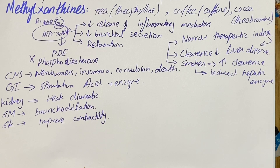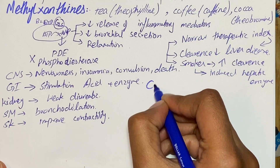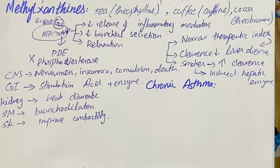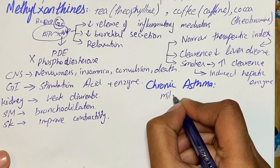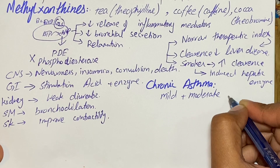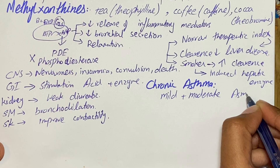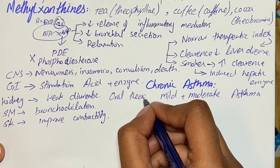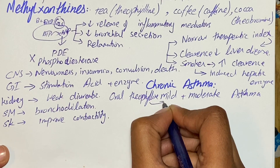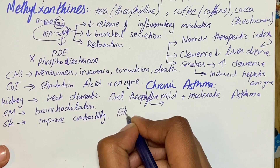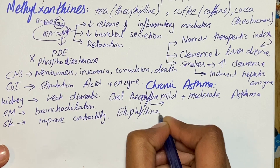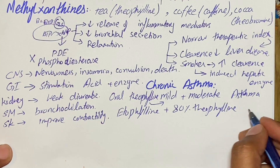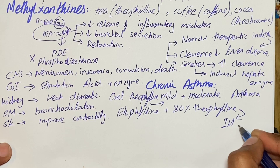In chronic asthma, oral theophylline can be used to control mild to moderate asthma. Only oral theophylline is used for this purpose. Etophylline, along with 80% theophylline, is also available in the market in intramuscular (IM) injection form.